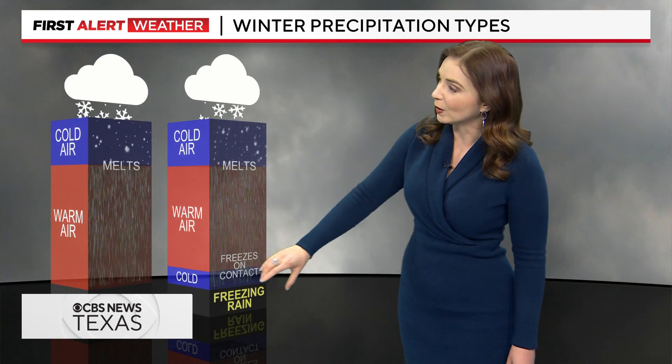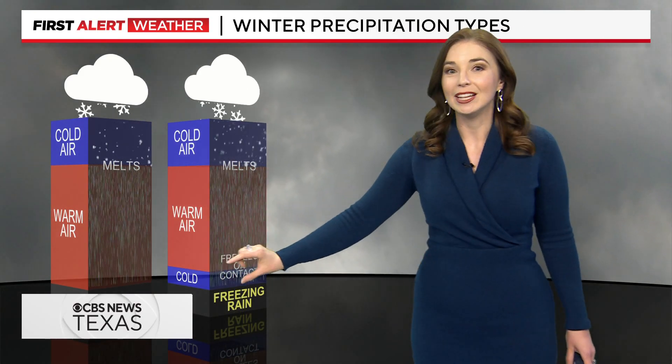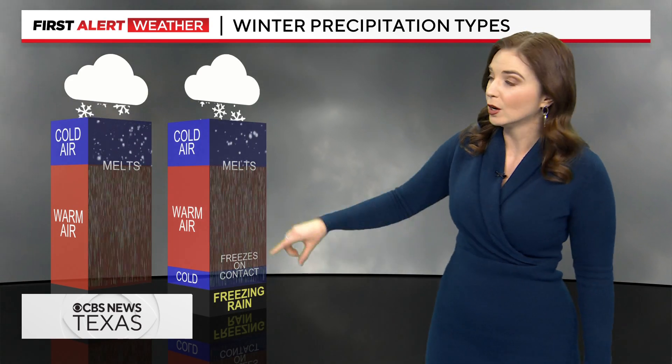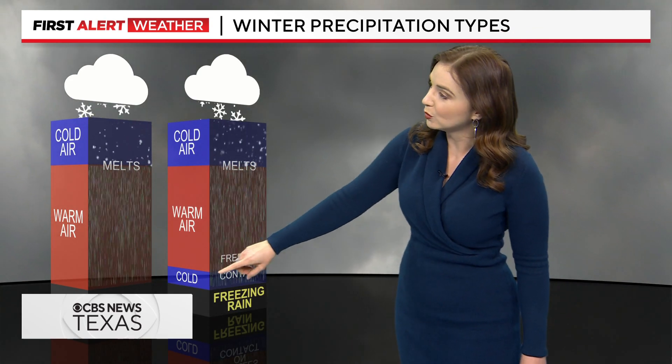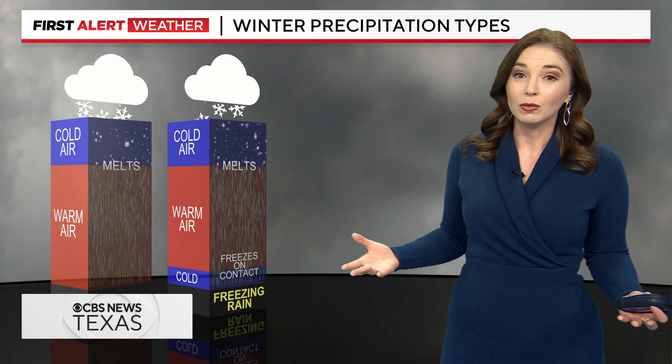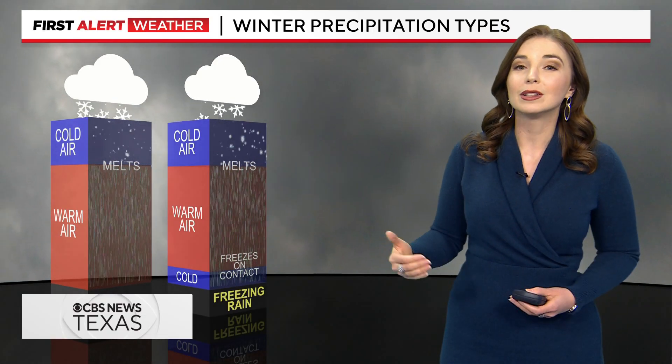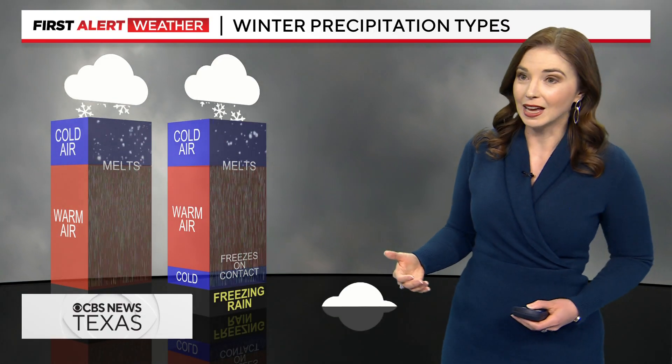When we get freezing rain, we have a shallow layer of cold air, so it's still melting as it falls through the air, but once it reaches the surface that's all sitting below 32 degrees, so it freezes on contact.